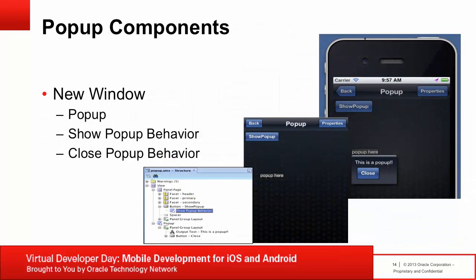The popup component is at the same level as the panel page and displays a popup window that can be as complex or simple as a panel page. You typically declare it as a child of the view component. The show popup behavior operation provides a declarative way to show the popup in response to a client trigger event, specified using the type attribute. You can also specify the display location using the align and alignId properties. The close popup behavior operation provides the declarative way to close the popup.